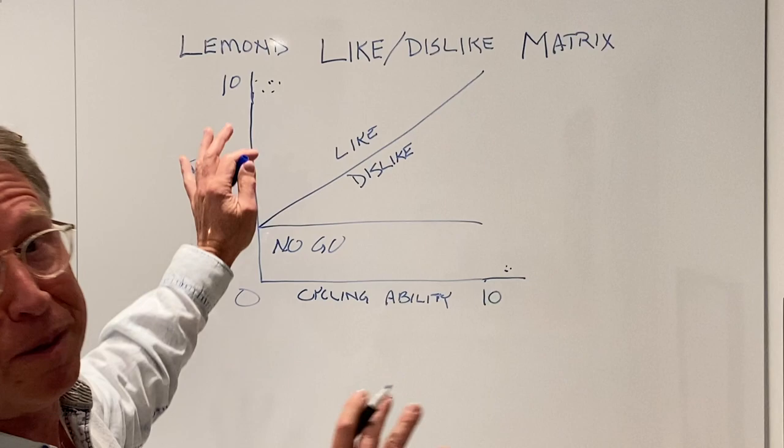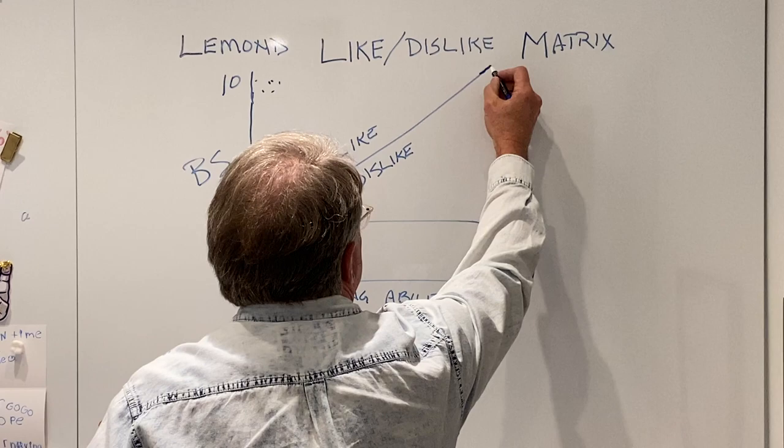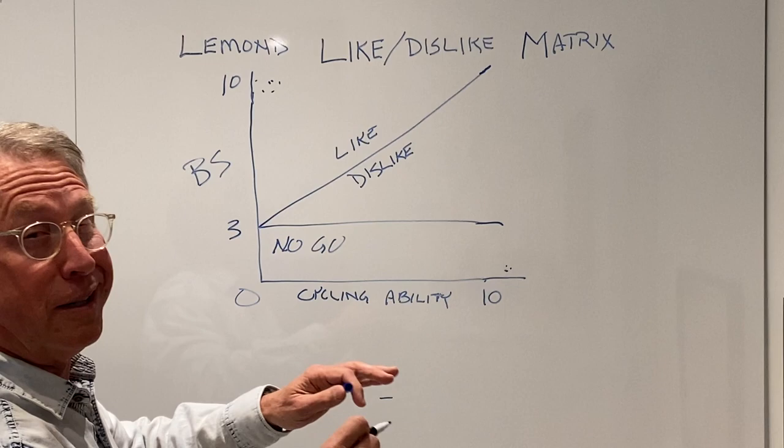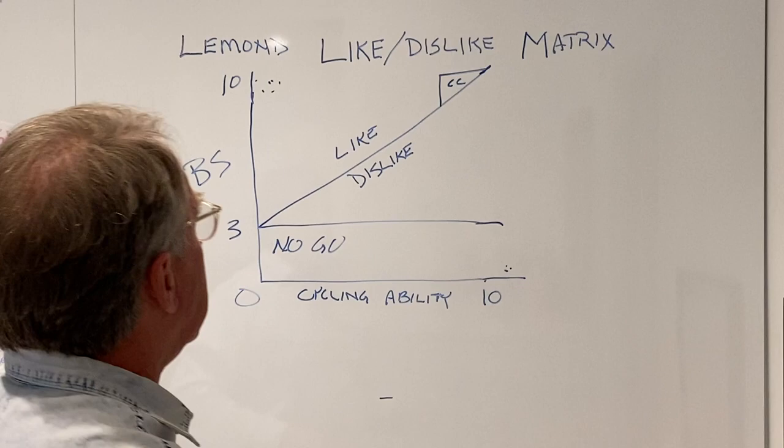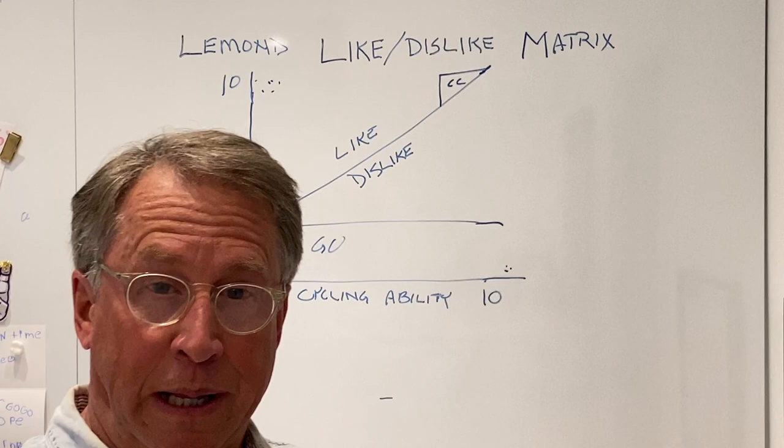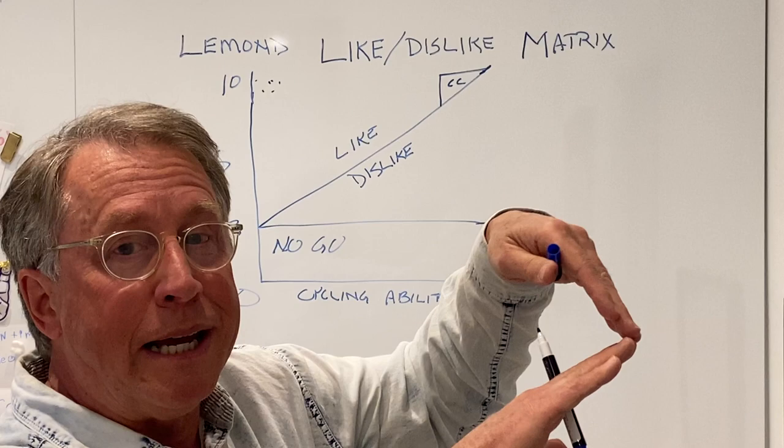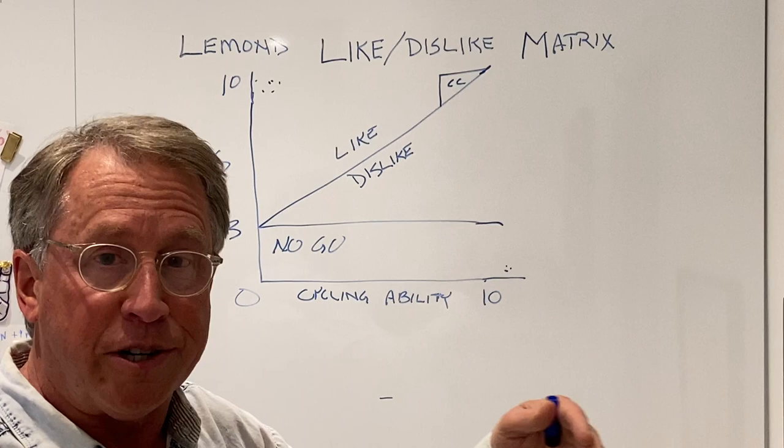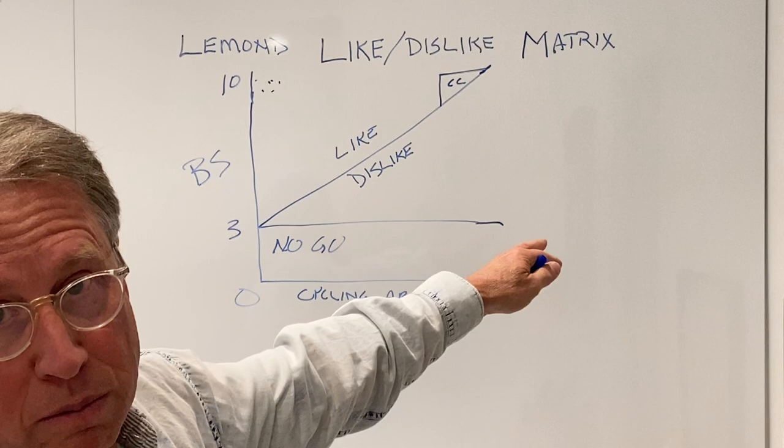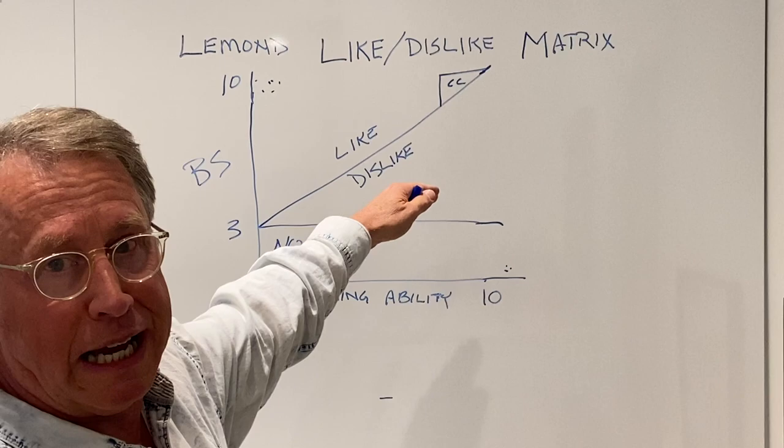Now we could also put somebody way out over here, but the problem is as you get far to the right where you're a really good cyclist, it's really hard for Lamond to like you. We call this the coffin corner. What is the coffin corner? In aviation, the coffin corner is defined as a plane flies very high in altitude and goes very fast. They have a maximum Mach number, that's as fast as they can go. But as you climb higher, the stall speed starts to come up and it meets the maximum Mach number. At some point you can't go any faster, you can't go any slower, then you crash and you die.